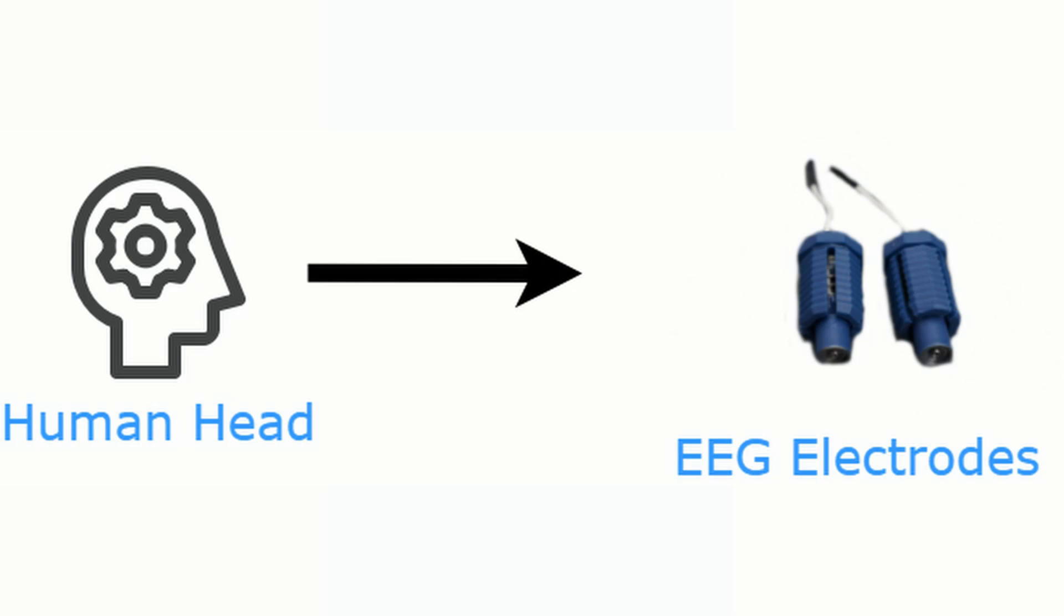Electroencephalogram, or EEG electrodes, are placed on the head. They detect electrical signals induced by blinking.